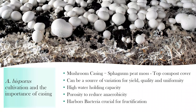To answer that question, we want to profile community composition within the casing and understand the functional processes these microbial communities perform. Casing is a sphagnum peat moss — the top layer that goes over the compost. The compost supplies nutrients to the mycelium, but casing has a different function: it doesn't supply nutrition, however it is crucial for the crop. It impacts yield, quality, and uniformity, so poor casing does not translate to a good crop outcome.